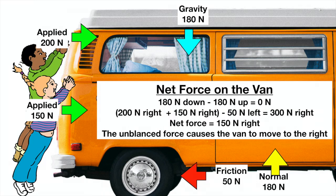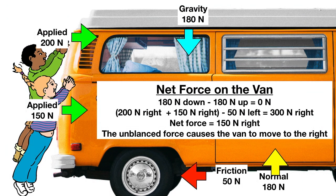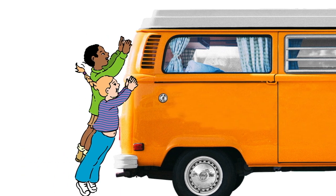To find out if the forces are balanced or unbalanced, you need to find the net force. We add forces going in the same direction and subtract forces going in the opposite direction. So that means we need to add the force of these two kids and subtract them from friction. We also need to subtract gravity from normal force. This gives us a net force of 150 newtons to the right, and so the van is going to move to the right.